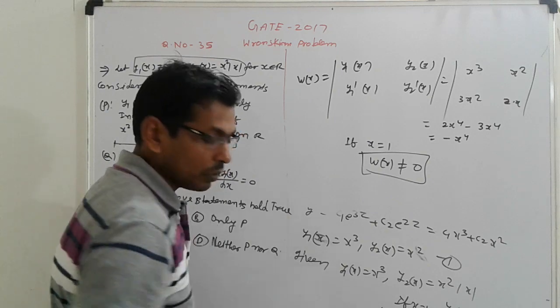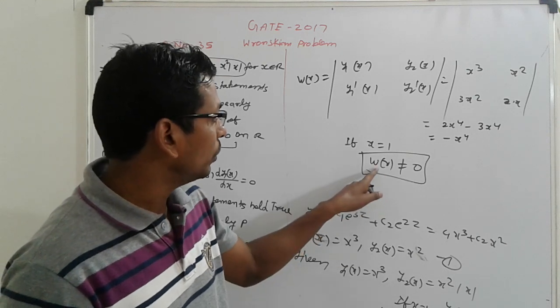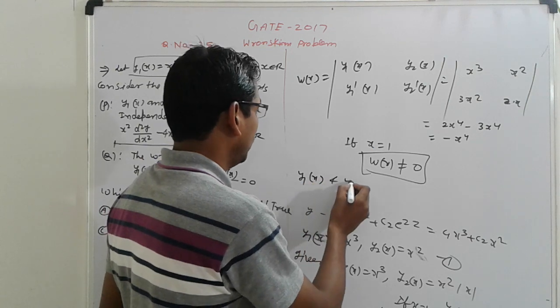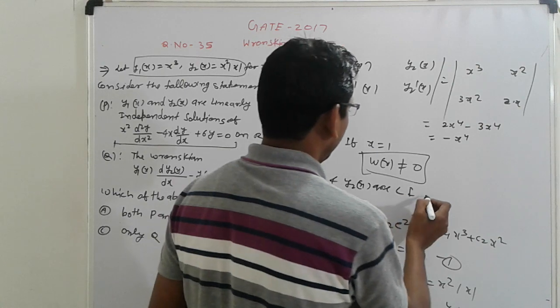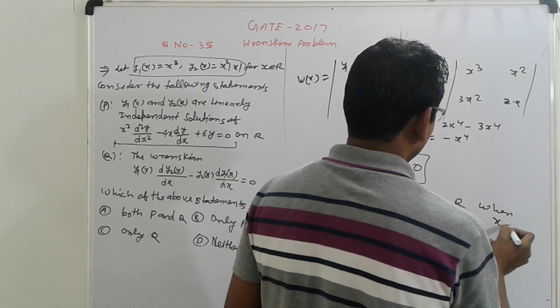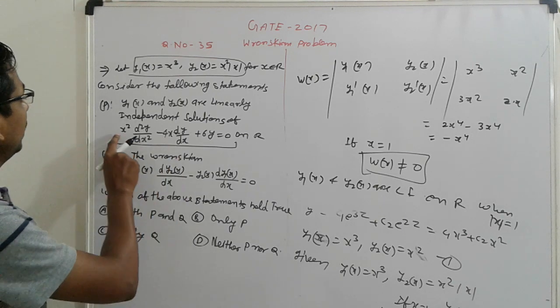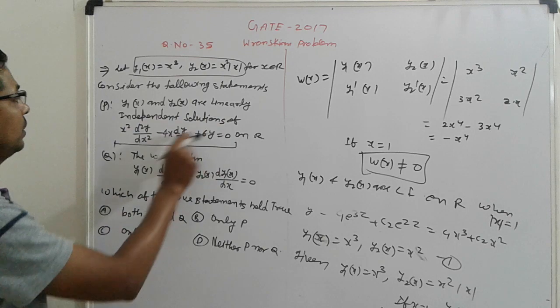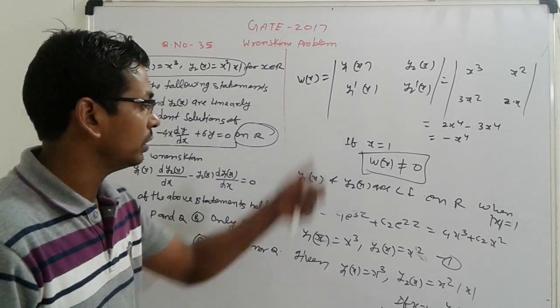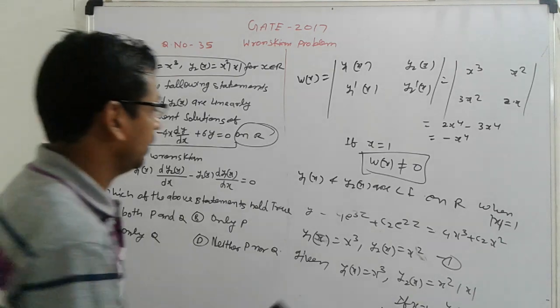Here if mod X equals 1, at X equals 1. If you imagine, this is X equals 1. Here, around X is equal to not equal to 1, here minus 1, not equal to 0. So that case, Y1(X) and Y2(X) are linearly independent on R. This is here, first is true.